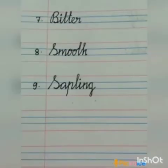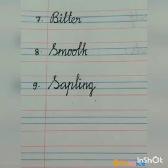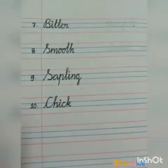Ninth dictation word is Sapling. Sapling means a small or baby plant — the small plant that grows from a seed in its early stage. Spell: S-A-P-L-I-N-G. Sapling.